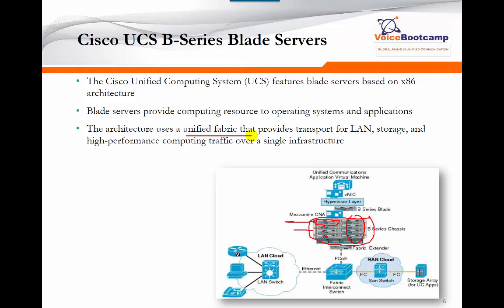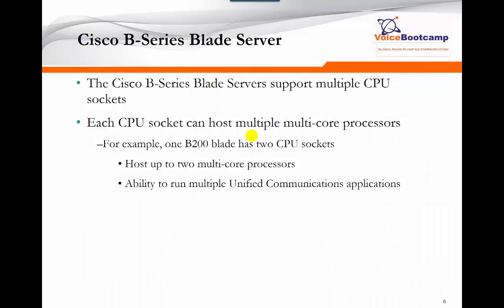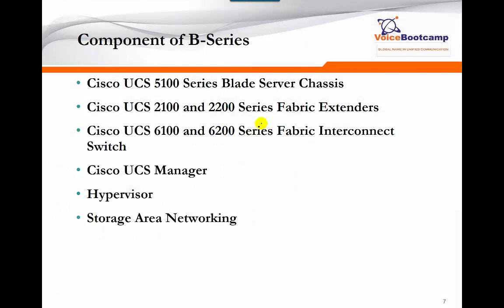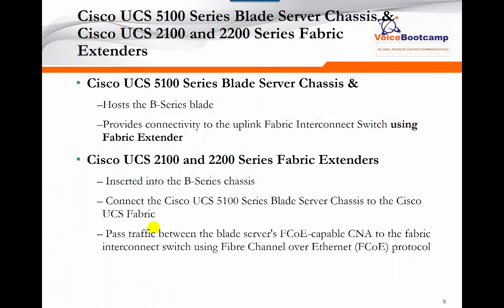The B-series server supports multiple CPU sockets. Each CPU socket can host multiple multi-core processors. For example, one B200 blade has two CPU sockets hosting up to two multi-core processors — so depending on the core count, it can go to 8, 12, 16, or more CPUs — giving the ability to run multiple Unified Communication applications simultaneously. The complete B-series solution includes a chassis, UCS 2100/2200 fabric extender, 6100/6200 fabric interconnect switch, Cisco UCS Manager, hypervisor, and storage area network.